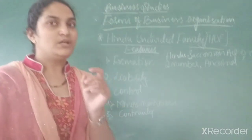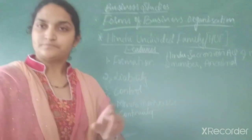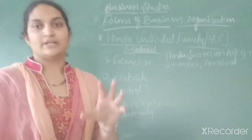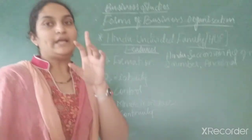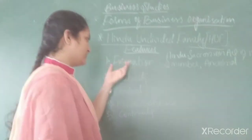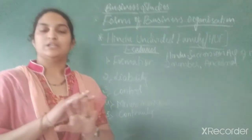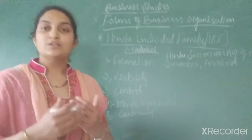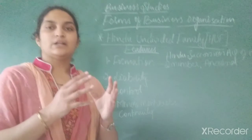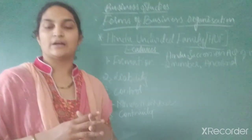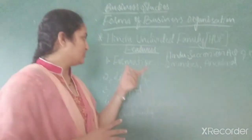The Hindu Succession Amendment of 2005 says that even girls have a right in the ancestral properties, whether married or unmarried. In order to form the HUF, you need two members in the family and ancestral properties. There is no need for any agreement as membership arises by birth, and the HUF is governed by the Hindu Succession Act of 1956.